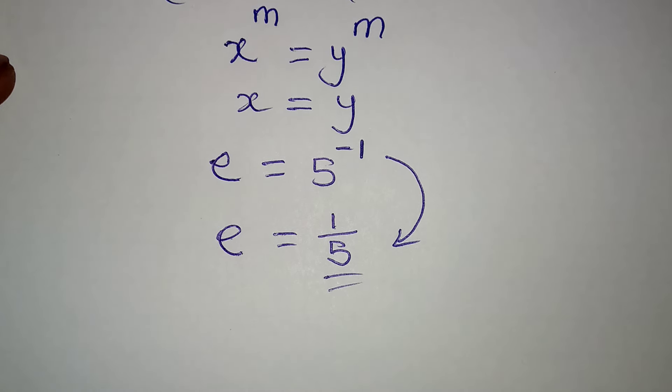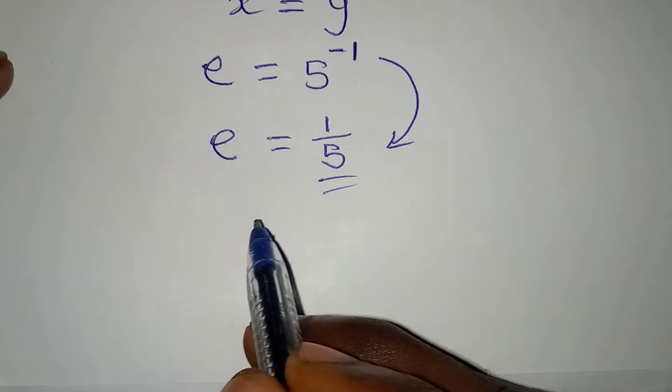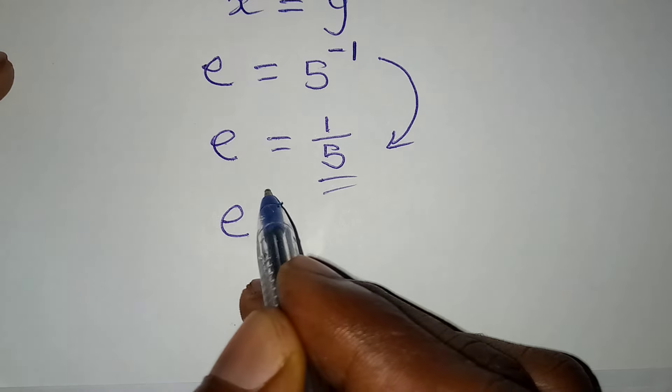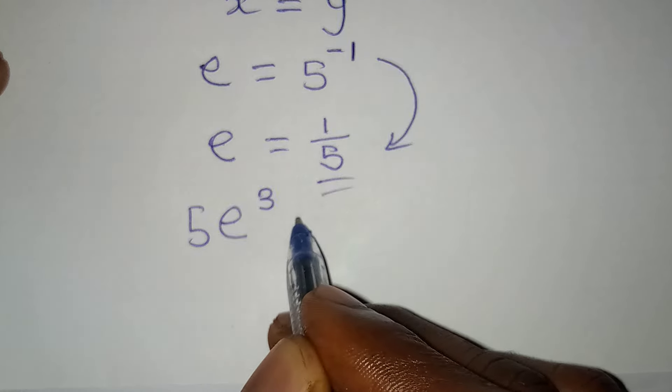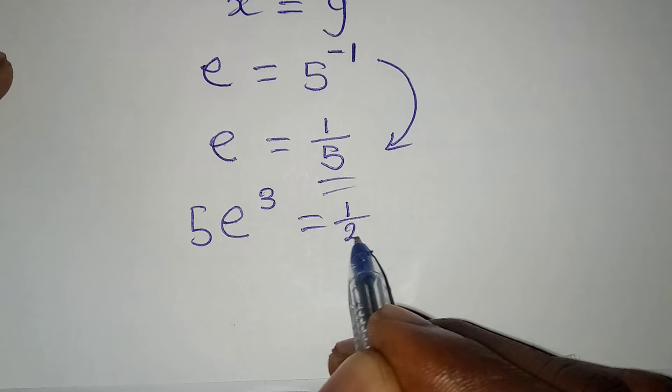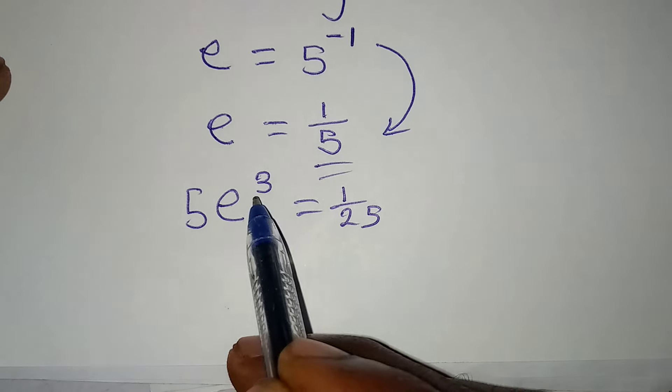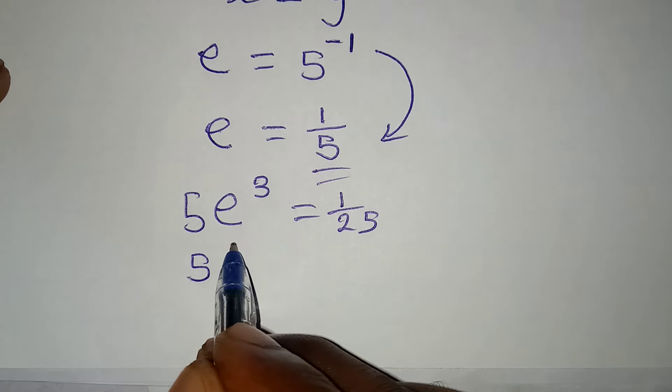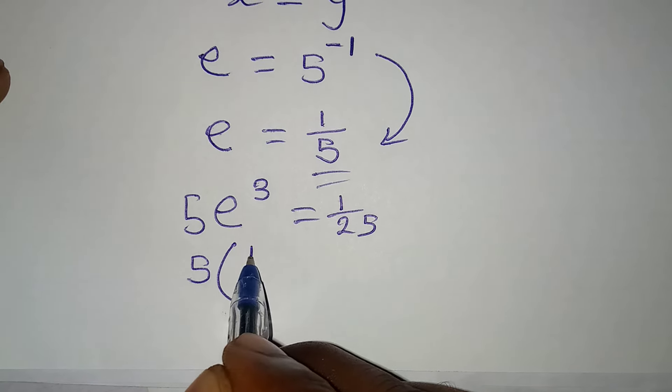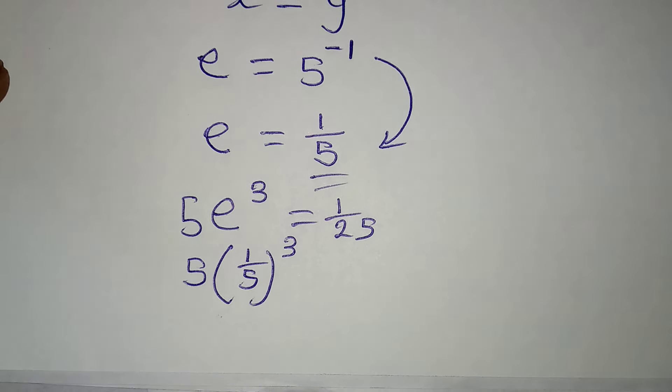And you can just check to know whether you're right or wrong. Remember, we have 5e to the power of 3 to be equal to 1 over 25, right? Yes, and our e now is 1 over 5. So this is going to be 5 multiplied by 1 over 5 to the power of 3.